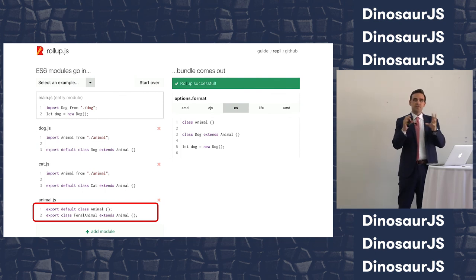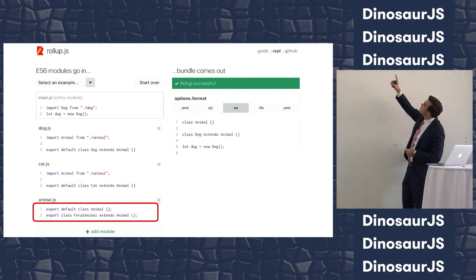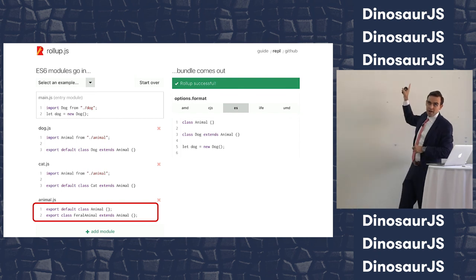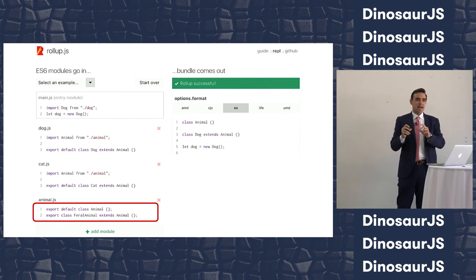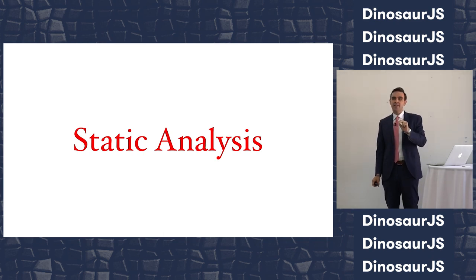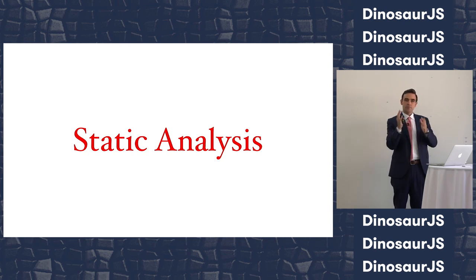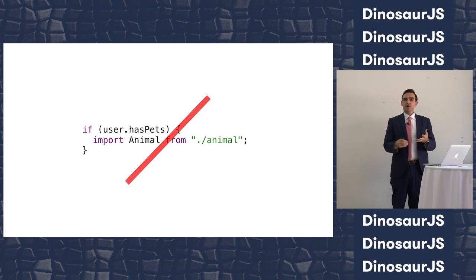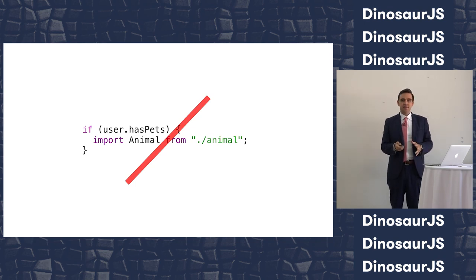It's not just modules — Rollup can do really smart things if it sees exports that are unused. For example, even if Animal.js is imported, Rollup is smart enough to not include the feral animal class if no one asked for that specific export. This is possible because module syntax was specifically designed to be statically analyzable — figuring out things about how a program will run without actually running it. Rollup uses static analysis to optimize file sizes without having to run any code.